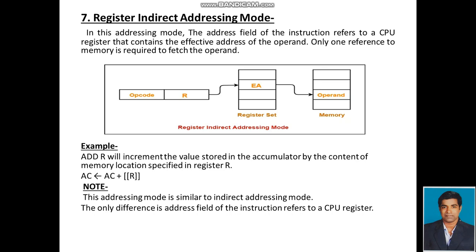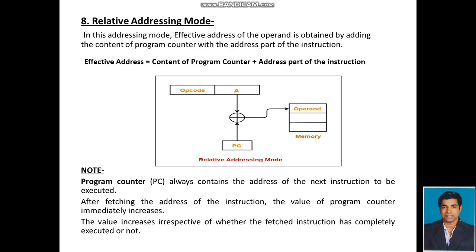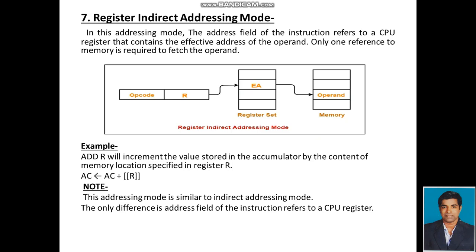For example, 'Add R' will increment the value stored in the accumulator by the content of the memory location specified in register R. This is denoted as: Accumulator = Accumulator + [R], where [R] is the register-referenced address denoting the operand value from memory.